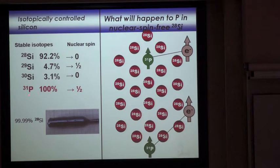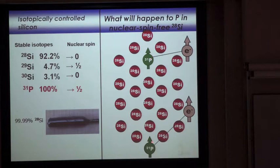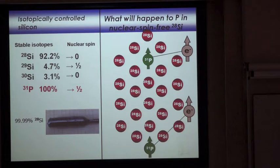We are going to introduce phosphorus into silicon. Phosphorus is made of one isotope, phosphorus-31, which has nuclear spin one-half as well. So we are going to put phosphorus in a matrix of 28Si, which does not have nuclear spins in the background, and then study the coherence of the electron bound to phosphorus and the coherence of the 31P nuclear spins. Phosphorus is like a donor — like hydrogen — because it has one nuclear spin and one electron spin, bound to each other by Coulombic interaction.